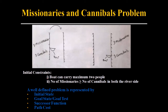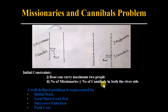The Missionaries and Cannibals problem is a well-defined problem in AI. Three missionaries and three cannibals want to cross a river using a boat. The constraints are: the boat can carry a maximum of two people, and the number of missionaries must be greater than or equal to the number of cannibals on both river sides.